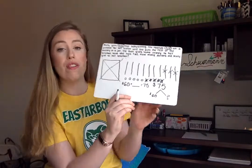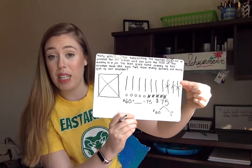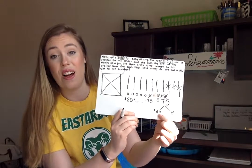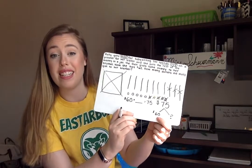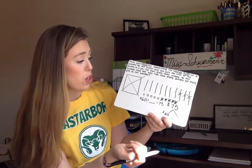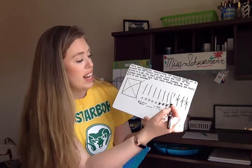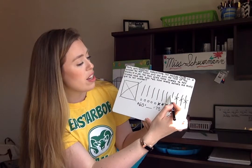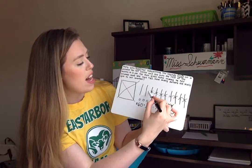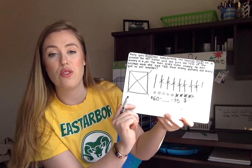We can think of this as a missing add-on problem: the $60 she has left plus whatever she gave to her brother equals $75. So we have to do $75 minus $60 to find this missing number. We've already got a picture of $75, so I'm going to keep working with this picture to subtract out $60. This should be nice and easy because we don't have to cross out any ones or borrow anything — we just need to cross out six groups of 10. So let's cross out: one, two, three, four, five, six.